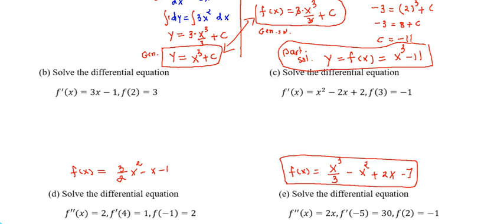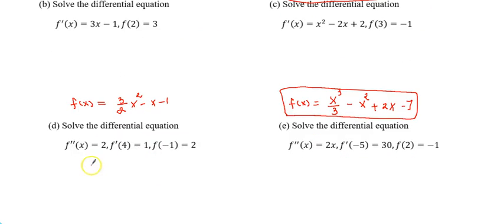So let me explain what happens if you have to do the process twice. For this case f''(x) is equal to 2. So we have to go two step equation. So I can say f'(x) is equal to 2x + C. Now I'm going to use this information to find this C which will give me 1 is equal to 2 times 4 plus C and I will have C is -7.